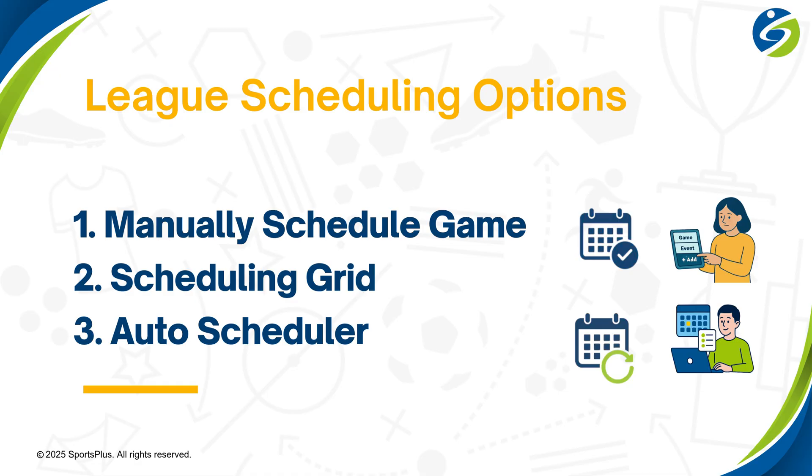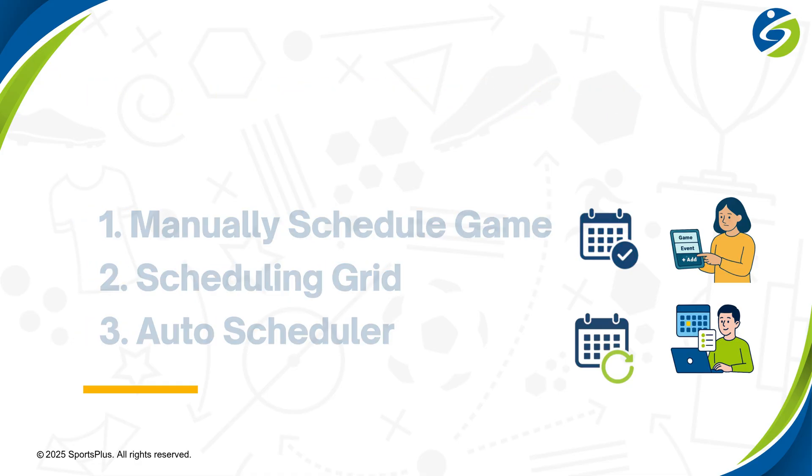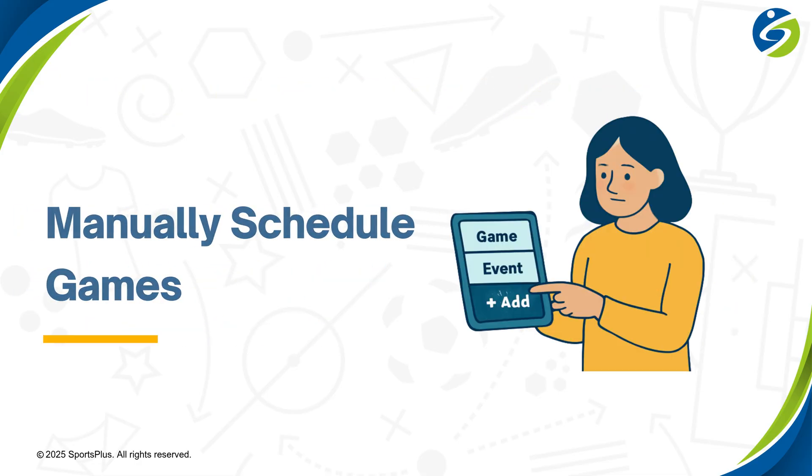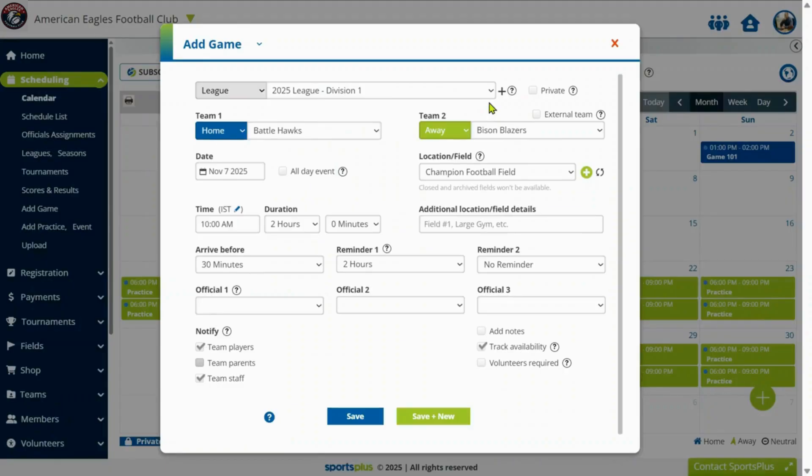There are three different methods. The first one is manual — add one game at a time.